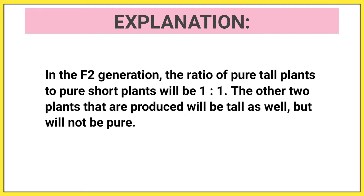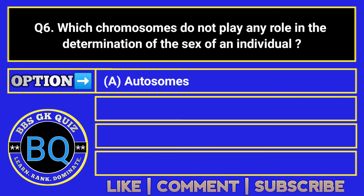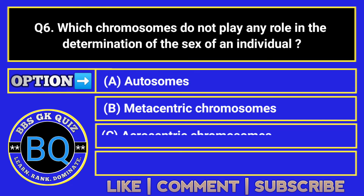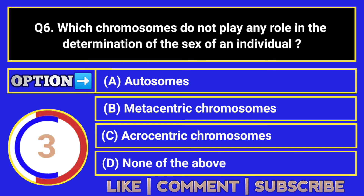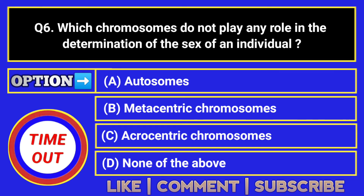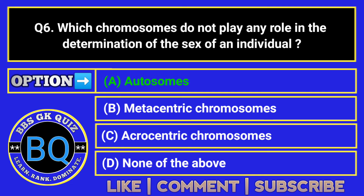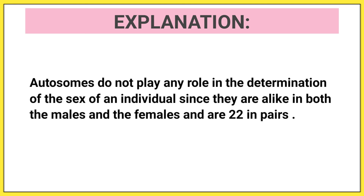Which chromosomes do not play any role in the determination of the sex of an individual? The correct answer is option A. Autosomes do not play any role in the determination of the sex of an individual since they are alike in both males and females, and are 22 in pairs.